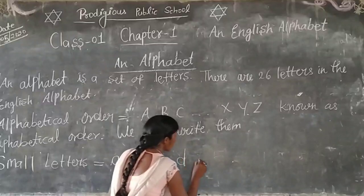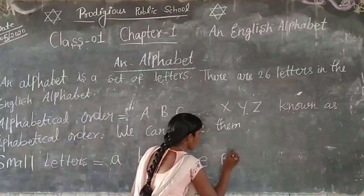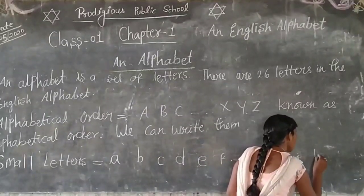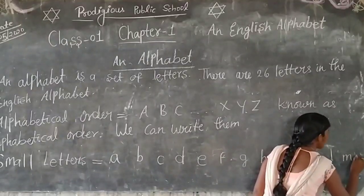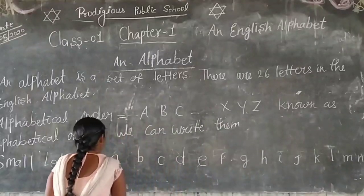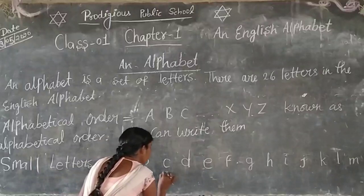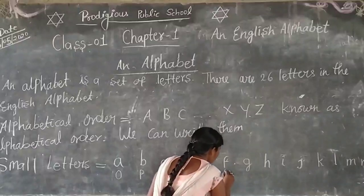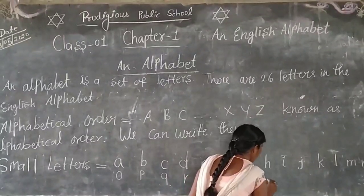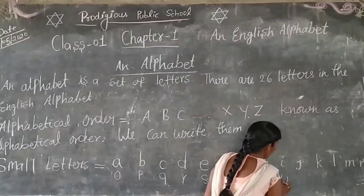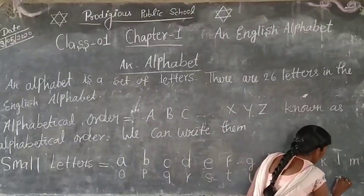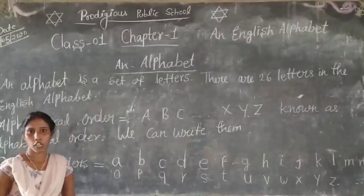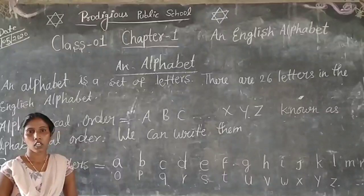बच्चों, आप लिखेंगें। Small letters: a, b, c, d, e, f, g, h, i, j, k, l, m, n, o, p, q, r, s, t, u, v, w, x, y, z. Student, it is your small letters, and today we are studying alphabet — capital letters and small letters.